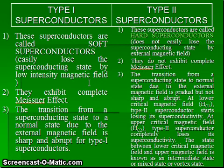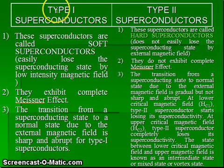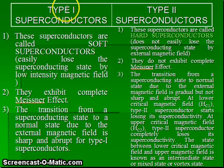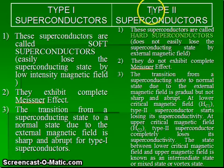The first difference is that type 1 superconductors are called soft superconductors because they easily lose their superconducting state under a low intensity magnetic field. Type 2 superconductors are called hard superconductors because they do not easily lose their superconducting state under an external magnetic field.